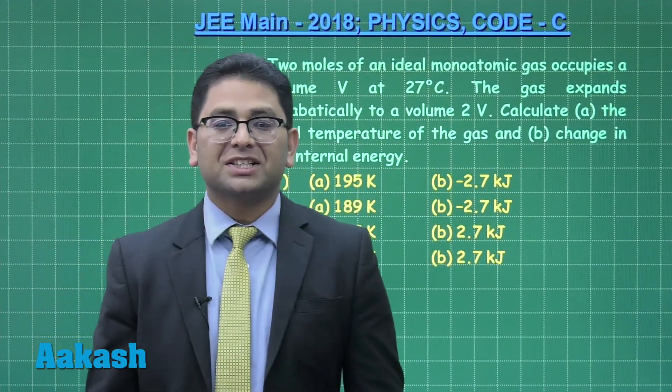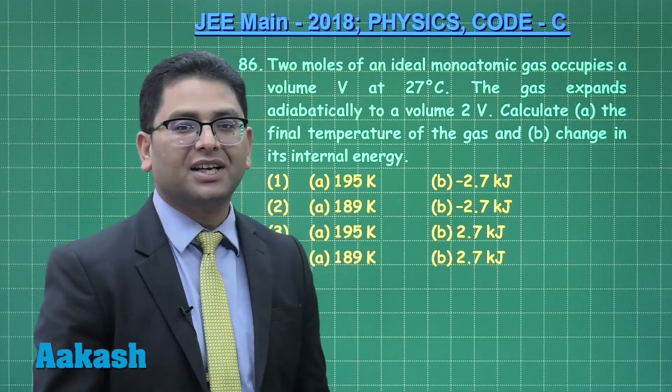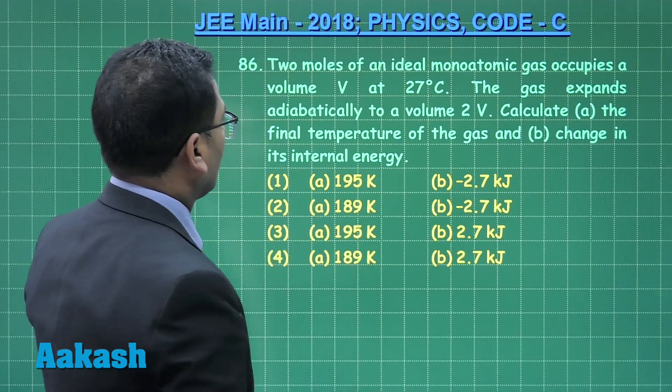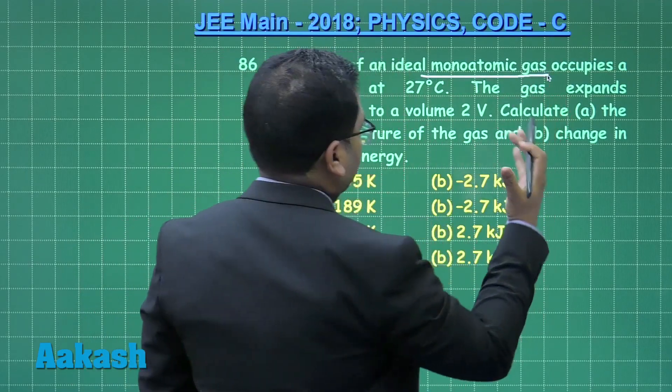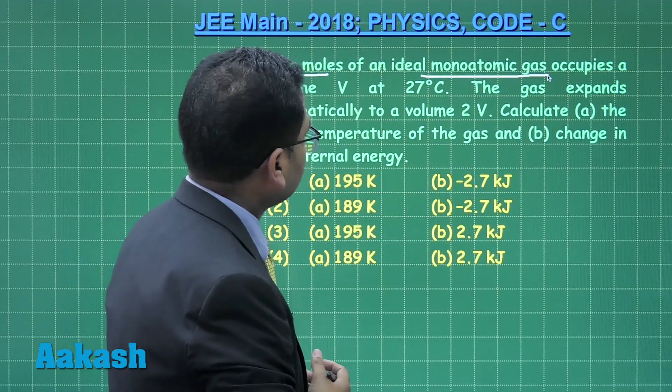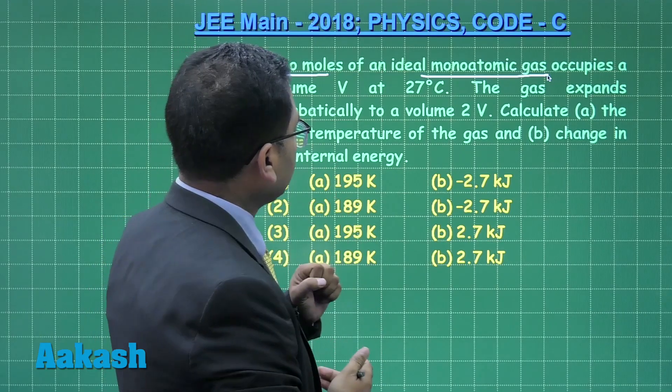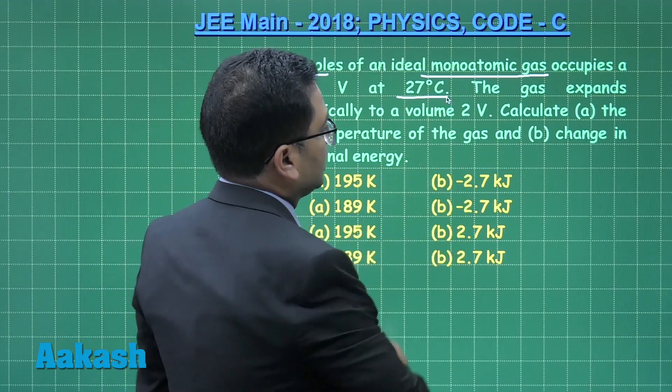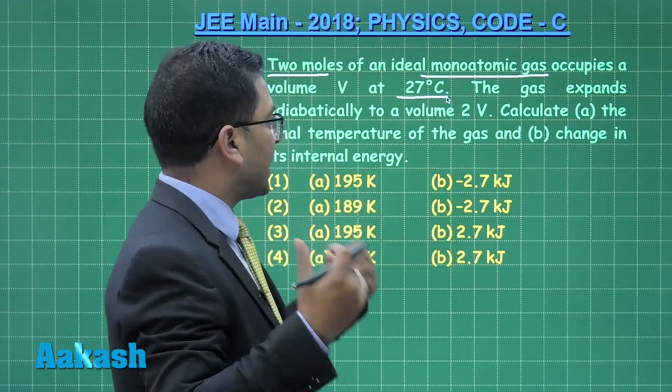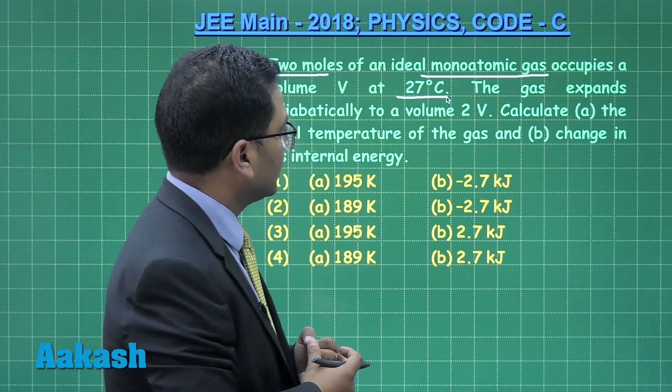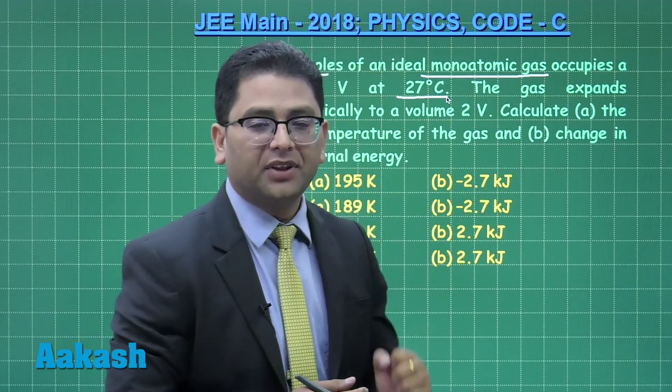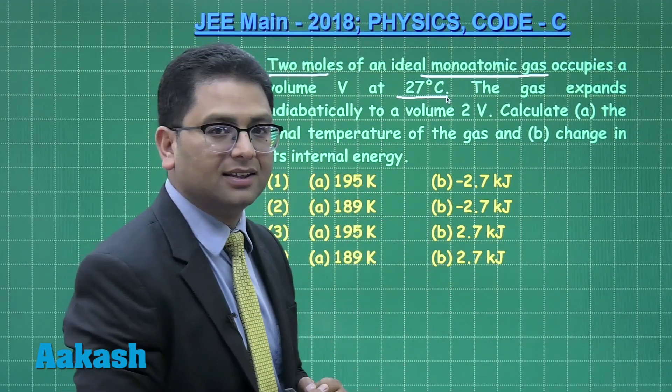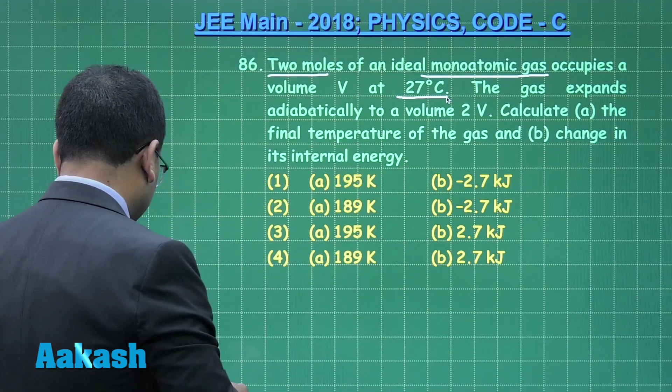Now let us see. Alright, question number 86 from the thermodynamics part. 2 moles of an ideal monoatomic, I am just extracting the essential data, occupies a volume V at 300 Kelvin. The gas expands adiabatically to a volume 2V. We need to calculate the final temperature and the change in its internal energy.